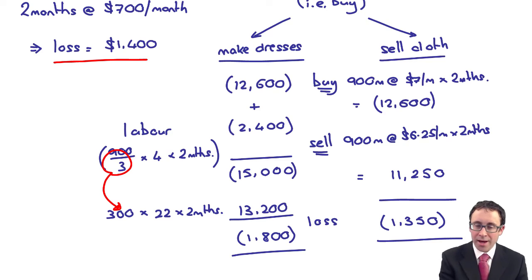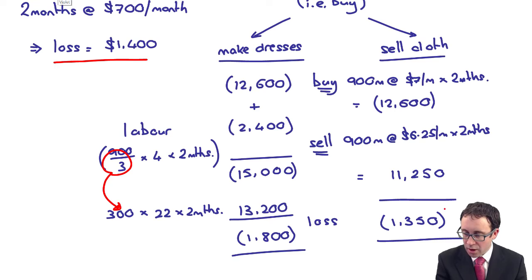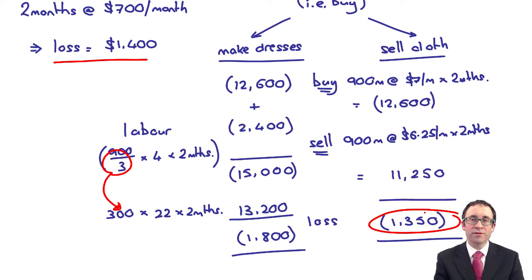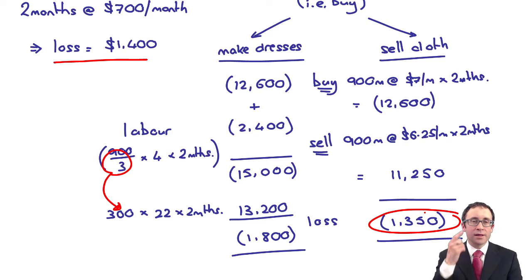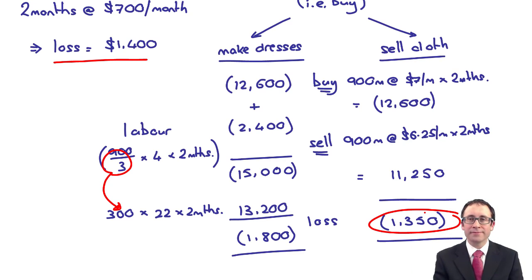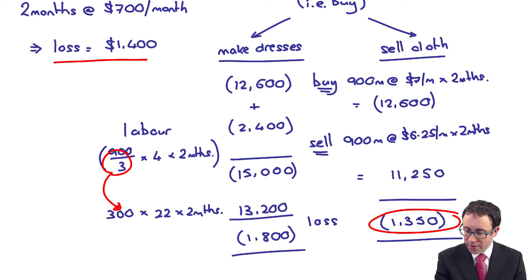Looking at the provision, it is the lower of the scenarios. Under the onerous contract, the best option is buying and selling the cloth with a loss of $1,350, so the provision is recognised at $1,350. There will also be a note to the accounts explaining the basis of the calculation, the nature of the obligation, and the likelihood of it occurring.